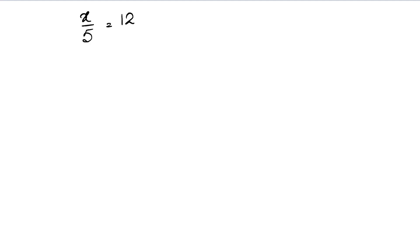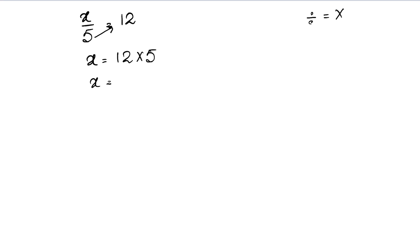The variable is on the left side. Whatever is dividing on the left side, we multiply on the right side. So 5 would be multiplied over. Because the value on the left side was divided, we multiply by 5 on the right side. So 12 times 5 is 60. Our value of x is 60.